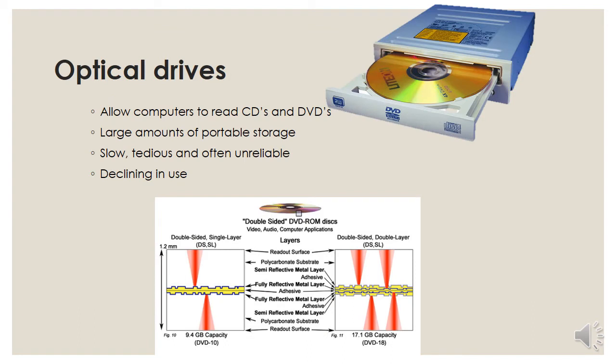Optical drives are the next type. These allow computers to read CDs and DVDs. They store quite a large amount of data and are totally portable, which is convenient. However, they are quite slow to use — if you've ever written files onto a CD or DVD, you know it takes quite a long time. They are tedious to use, often unreliable, and are also declining in use.